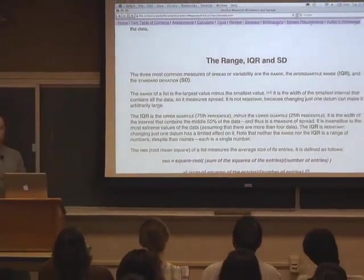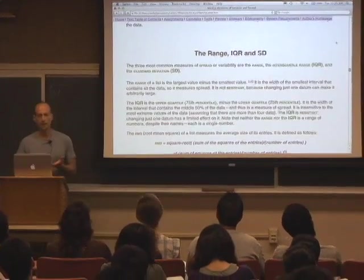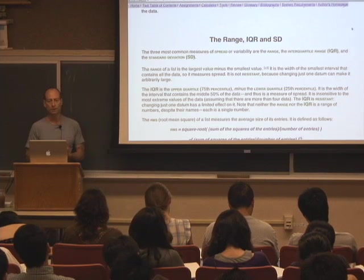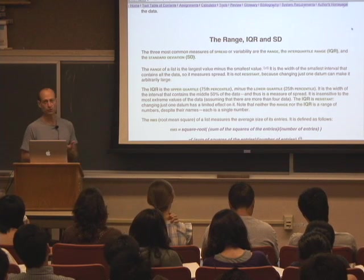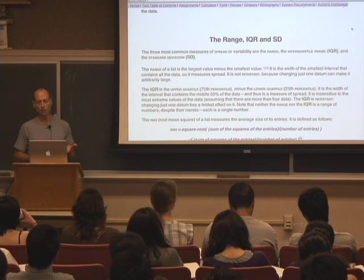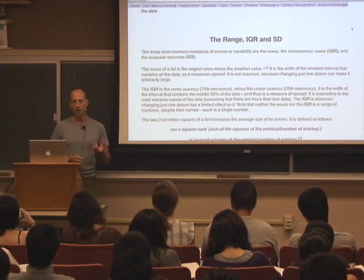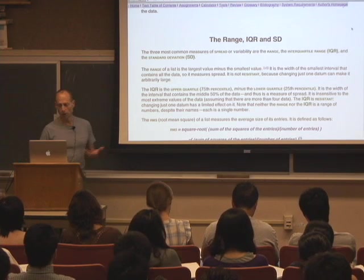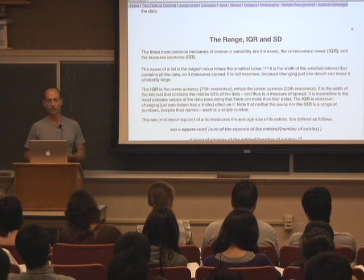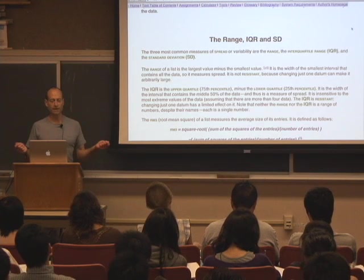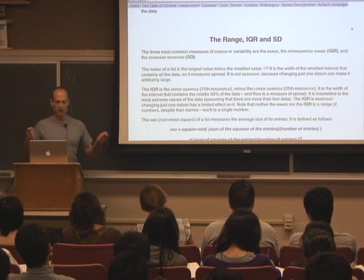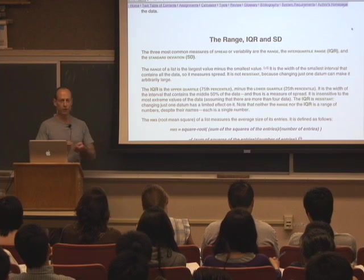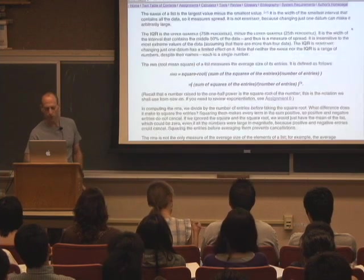We talked about three measures of location; now we'll talk about three measures of variability or spread. The mean and SD are not resistant — you can make them whatever you want by changing just one number. The IQR is resistant, like the median. The range is simply the largest observation minus the smallest. In statistics, the range is a single number — largest minus smallest — not an interval.